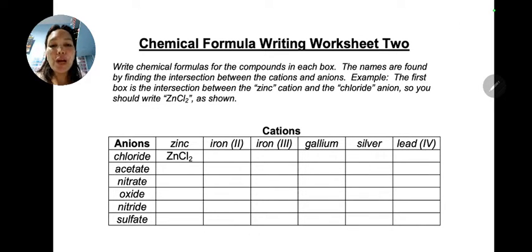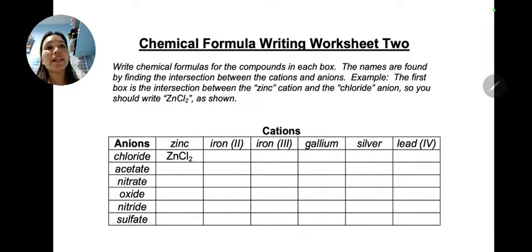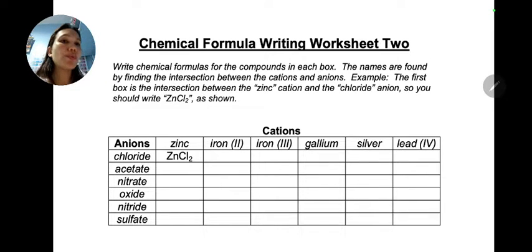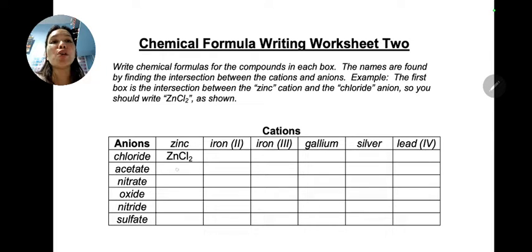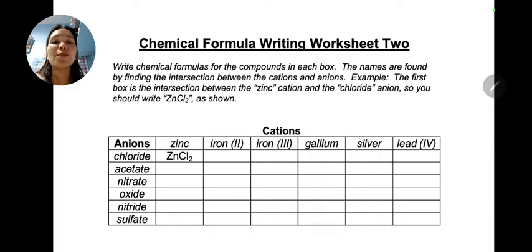Hi class! So for our lesson for today, we're going to answer your Chemical Formula Writing Worksheet as your classwork from last week. So here is your worksheet that I have given you. The first intersection of the columns and rows has been answered already — we have zinc chloride.